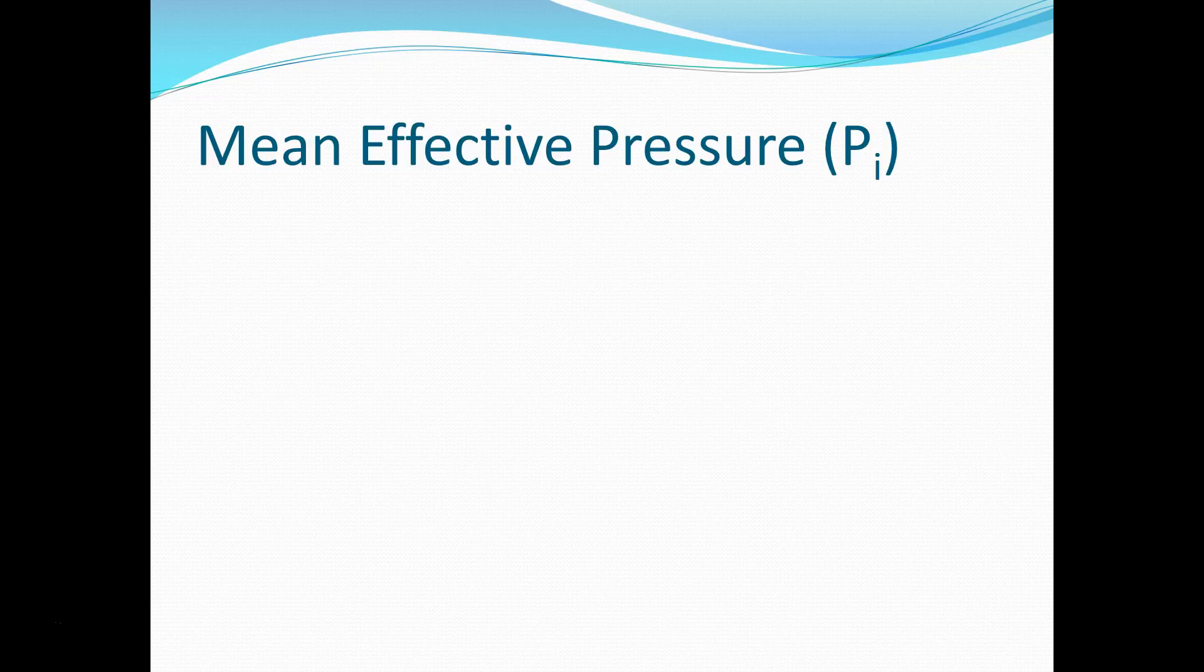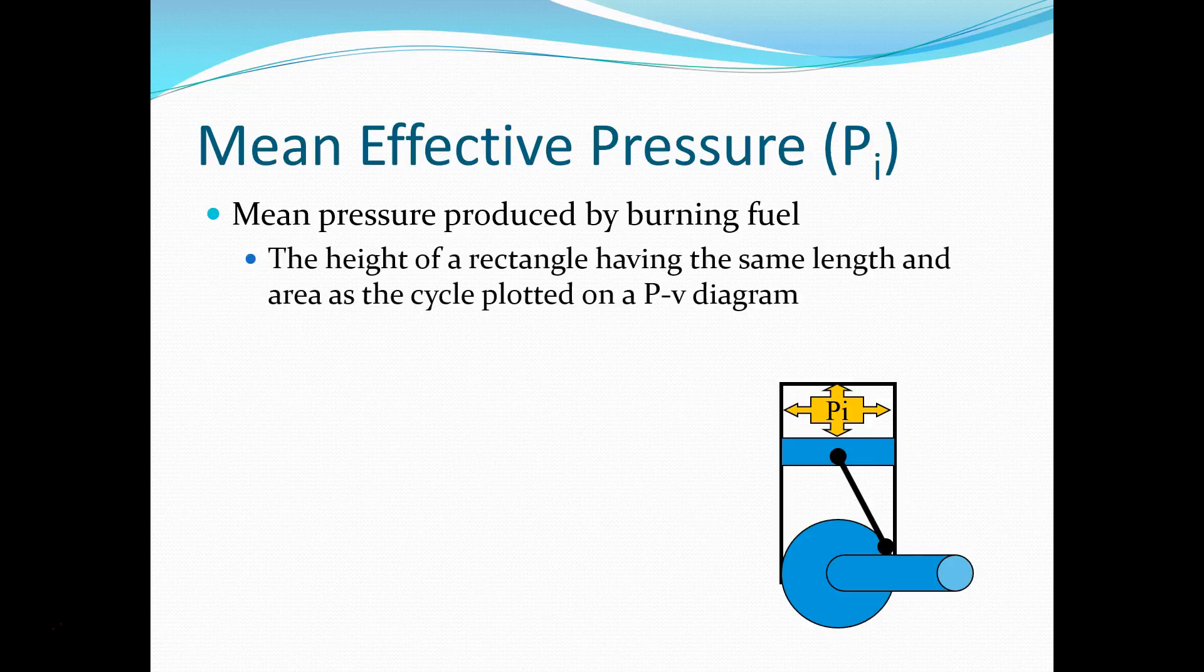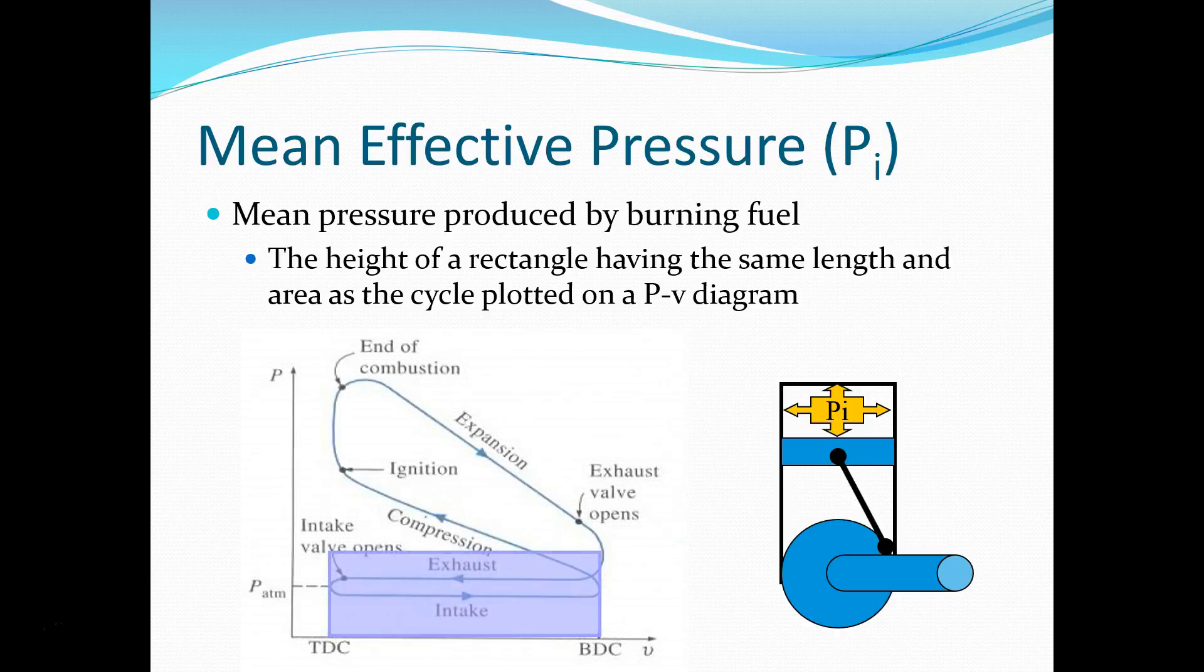So mean effective pressure, what we consider it is the mean pressure throughout the cycle produced by us burning the fuel, and what we create is a rectangle having the same length as the stroke or the change in volume, and same height as the mean effective pressure. And so realistically, for any cycle, what I can do is I can come up with this idea of mean effective pressure to represent what happens inside of the cycle. So if I take it over the entire cycle, I don't care if I have a little bit more work produced at the front end or the back end. And what I just look for is over the entire cycle, because it happens so fast, what is it averaged out in terms of work that's done.